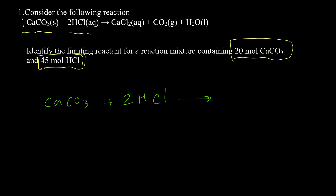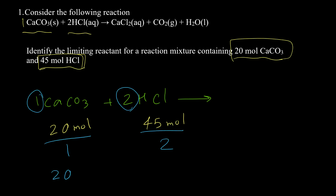To solve this problem we find the mole-per-coefficient ratio. The coefficient for calcium carbonate is 1 and for HCl is 2. For calcium carbonate we have 20 mol, and for HCl we have 45 mol. Dividing by their coefficients: calcium carbonate gives 20/1 = 20, and HCl gives 45/2 = 22.5. Since 20 is lower than 22.5, calcium carbonate is the limiting reactant.